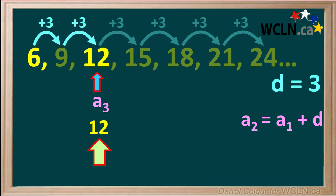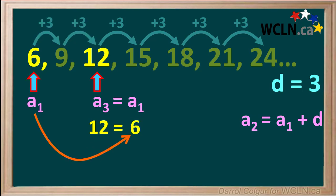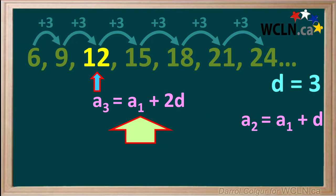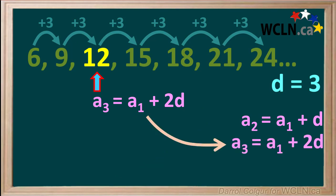The third term a3 is equal to 12, which is the sum of the first term a1, 6, plus 2 times 3, which is 2 times d. So we can say that a3 is equal to a1 plus 2d, which we'll make a note of over here.